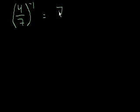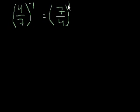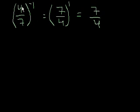Let's do 4 over 7 to the negative 1. Once again, we have a negative number in the exponent. That's the same thing as taking the reciprocal of the base and raising it to the positive exponent. So 7 fourths to the 1 — any number to the first power is just the same number — equals 7 fourths. So when you take a number to the negative 1 power, all you're essentially doing is getting the reciprocal of the number.